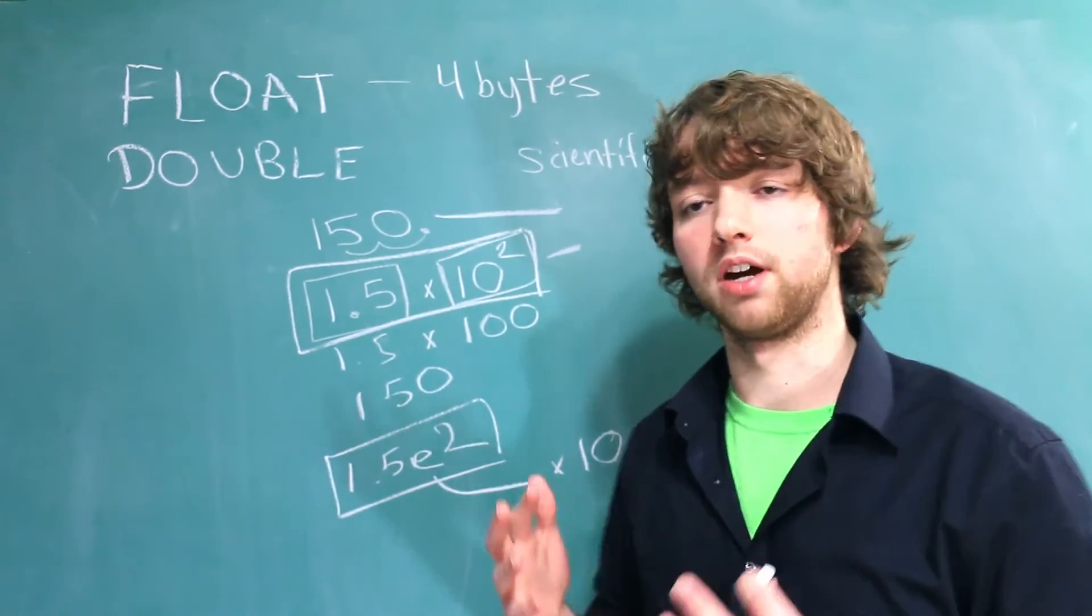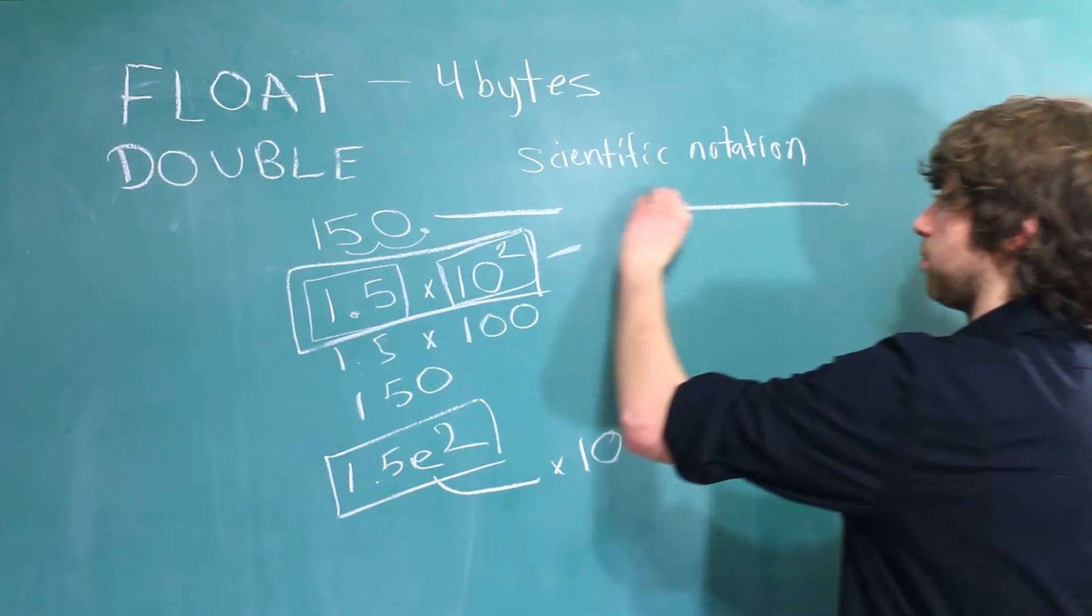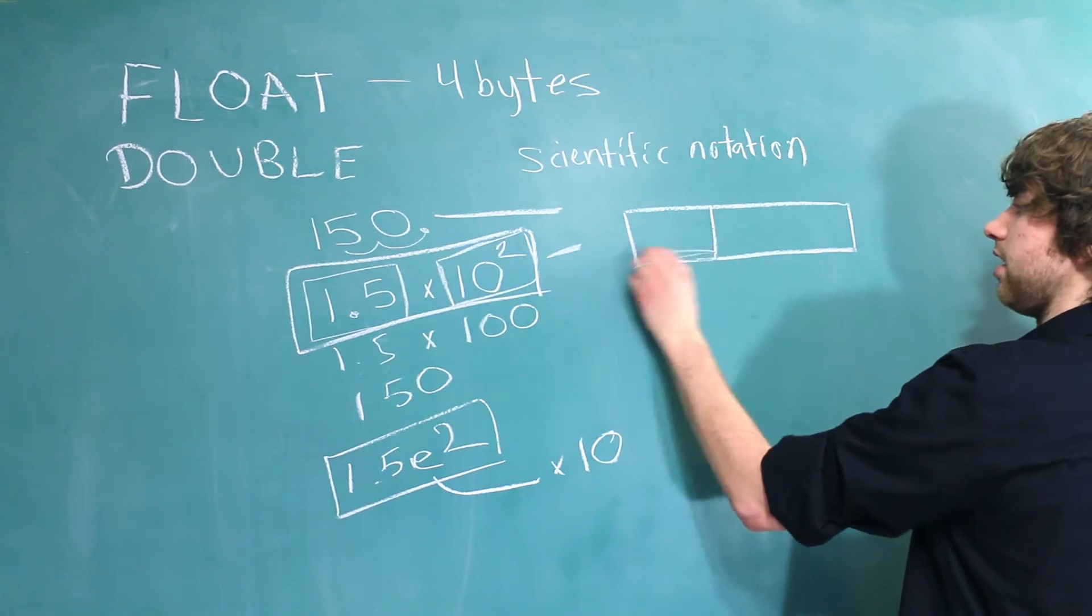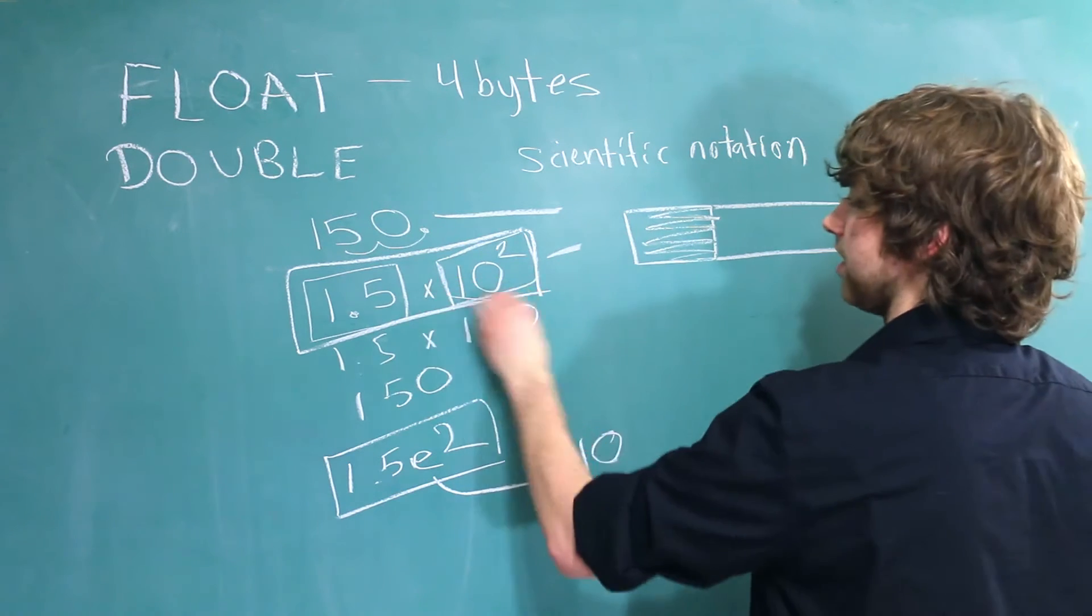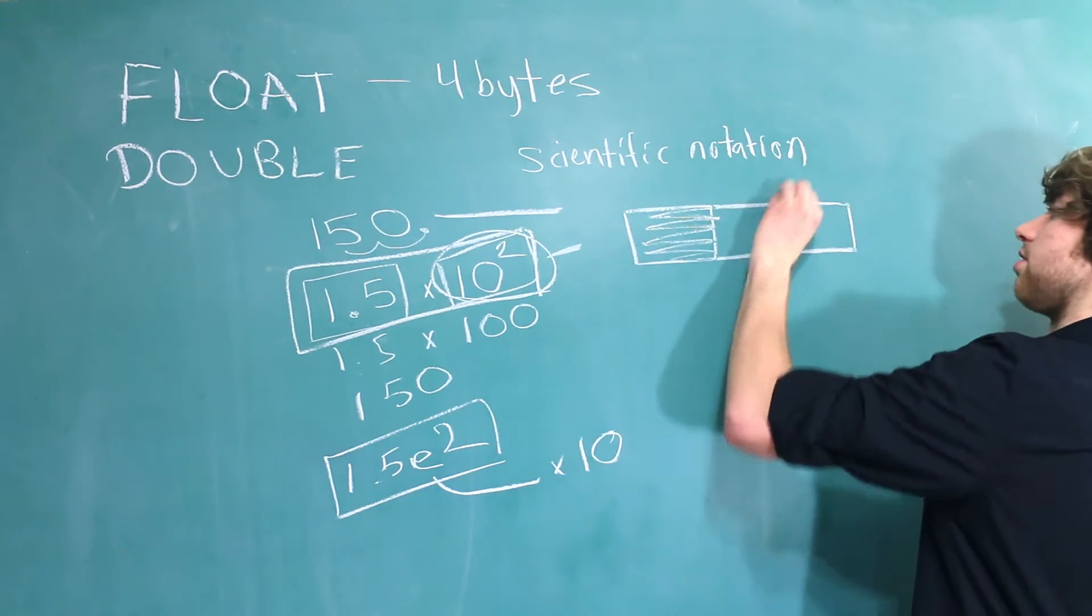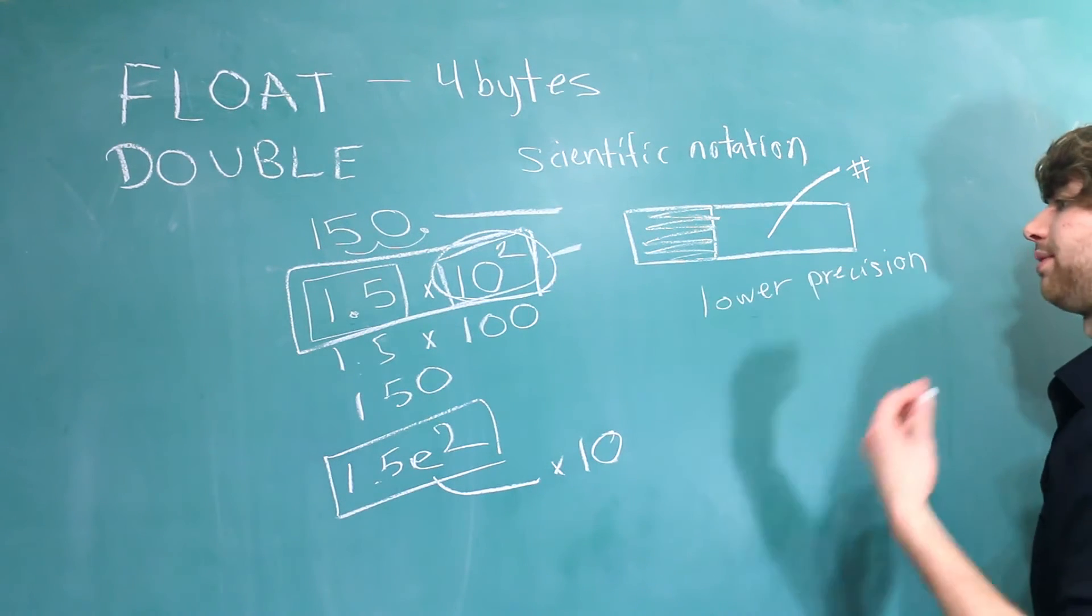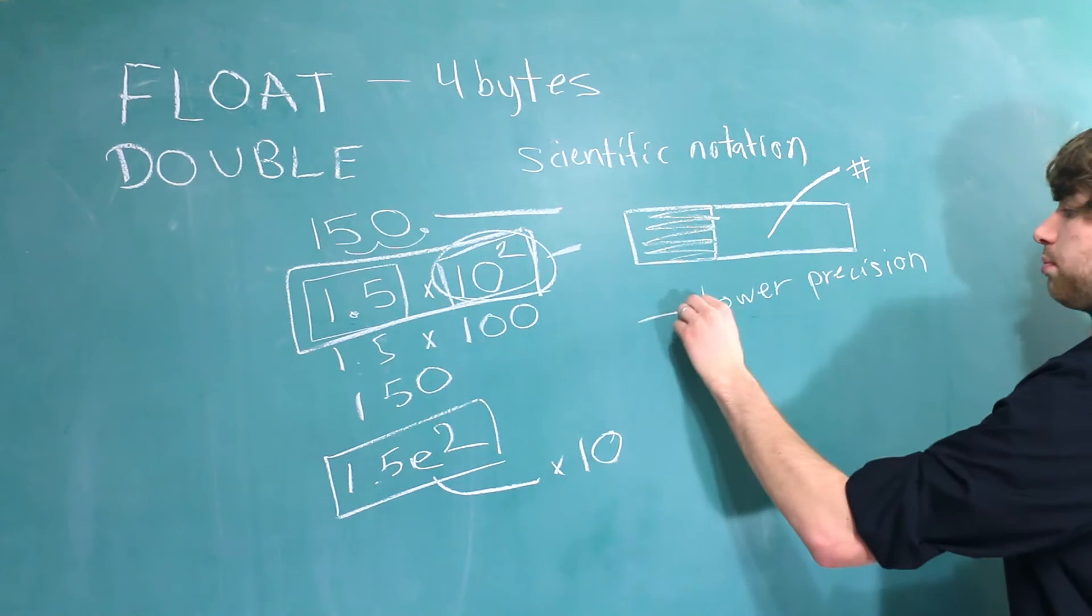The downside though is because, let's say, this is the number we are storing our data in, and this much is taken with this and a sign bit. Well, this is all that's left for the actual number. Because of this we have lower precision, so in summary we have the benefit of storing larger numbers at the cost of having lower precision.